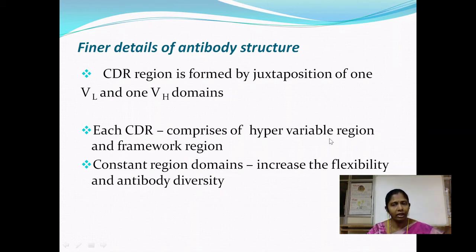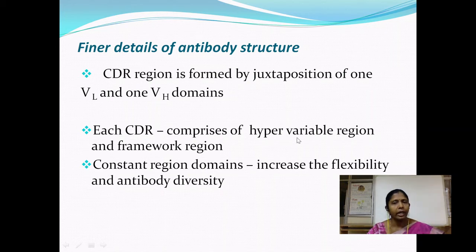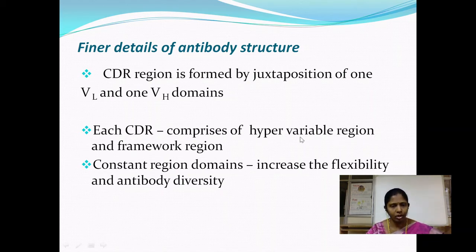Each CDR is divided into a hypervariable region and a framework region. It is in the hypervariable region that the vast diversity of antibody molecules exists — because of variations in the amino acid sequences in this region, antibodies capable of recognizing millions of antigens can be produced by the immune system. The framework region has a more conserved amino acid sequence compared to the hypervariable region.